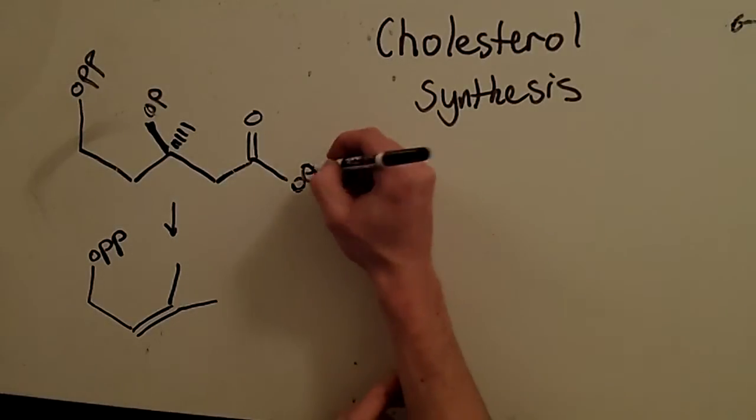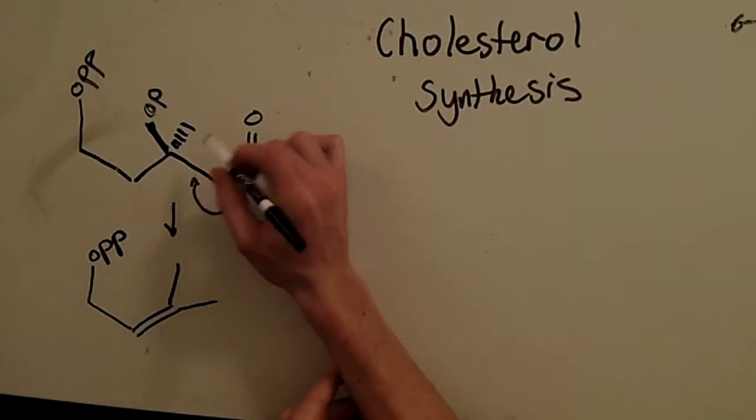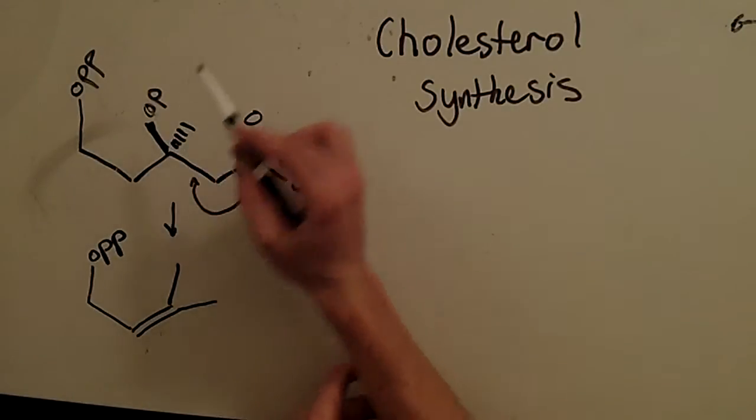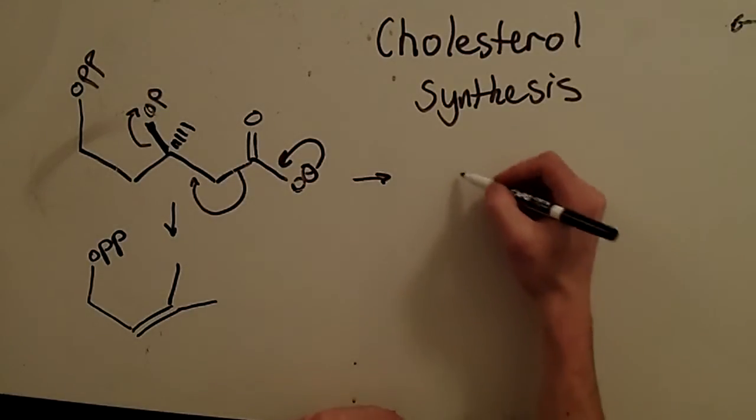Now, we decarboxylate. So how do we do that? We collapse here, and cause this here. So now we see why it was activated. Now, this can be a nice leaving group. Go out there.